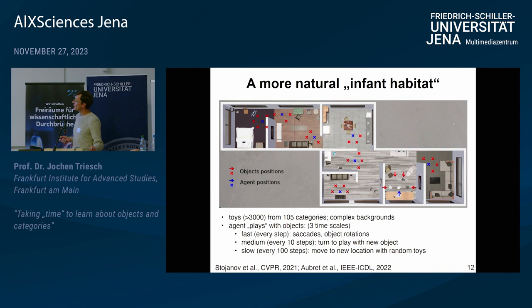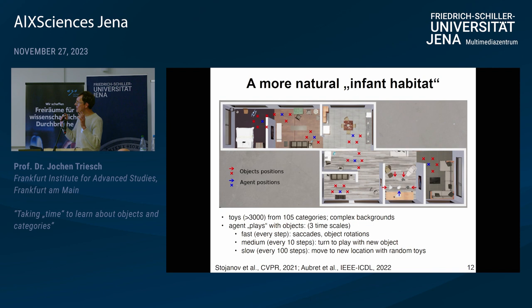How can we scale this up? The next thing we did was create a more natural infant habitat — a virtual apartment created by Arthur Aubrey, a postdoc in the lab — where we rendered scenes with objects against complex backgrounds to make the task much harder. Concretely, we used 3,000 objects from a big database. The agent plays with these objects across three different timescales: making little saccades to look at different locations around the object, rotating the objects, turning to play with a new object, and changing places in the apartment to play with new objects.